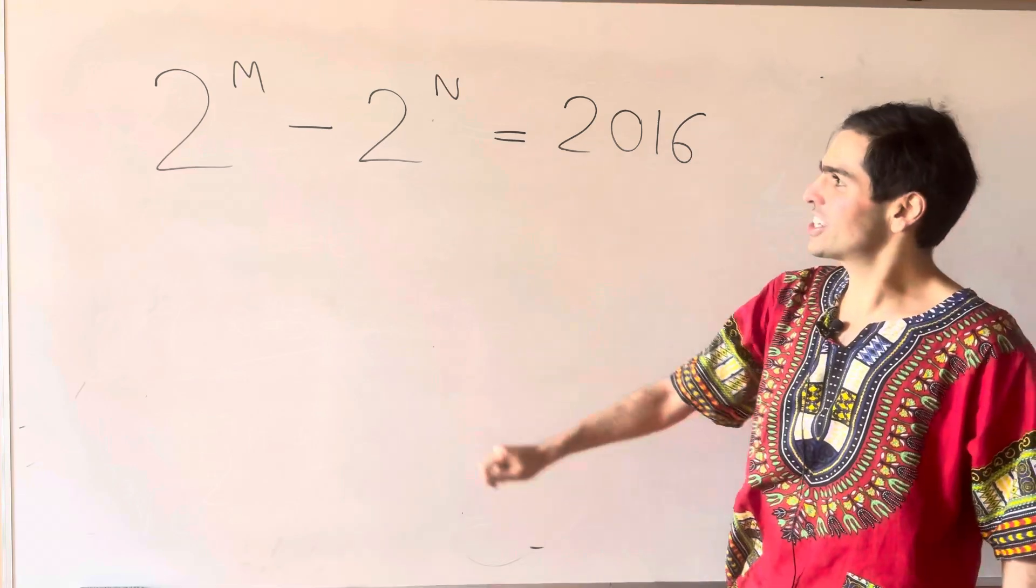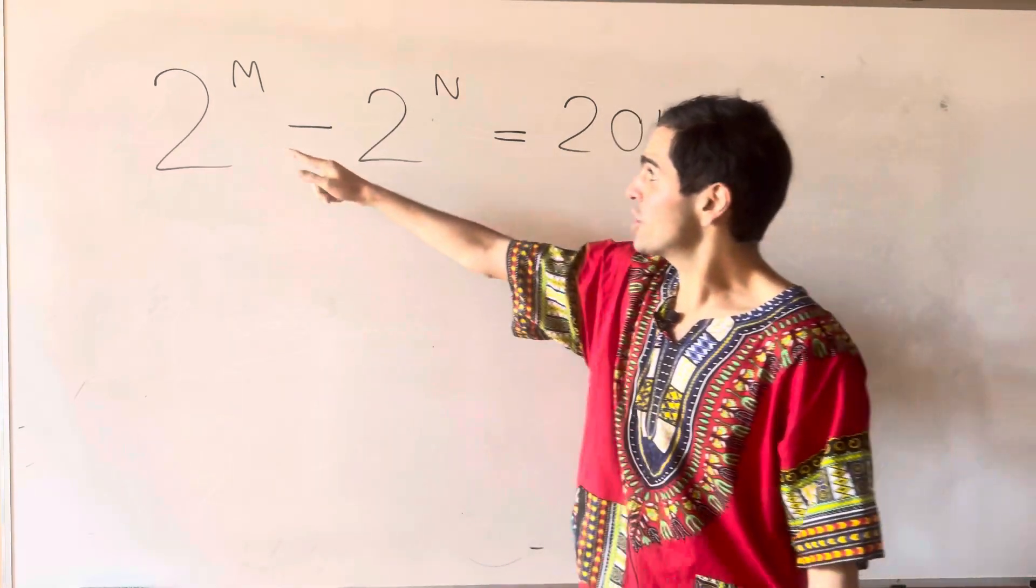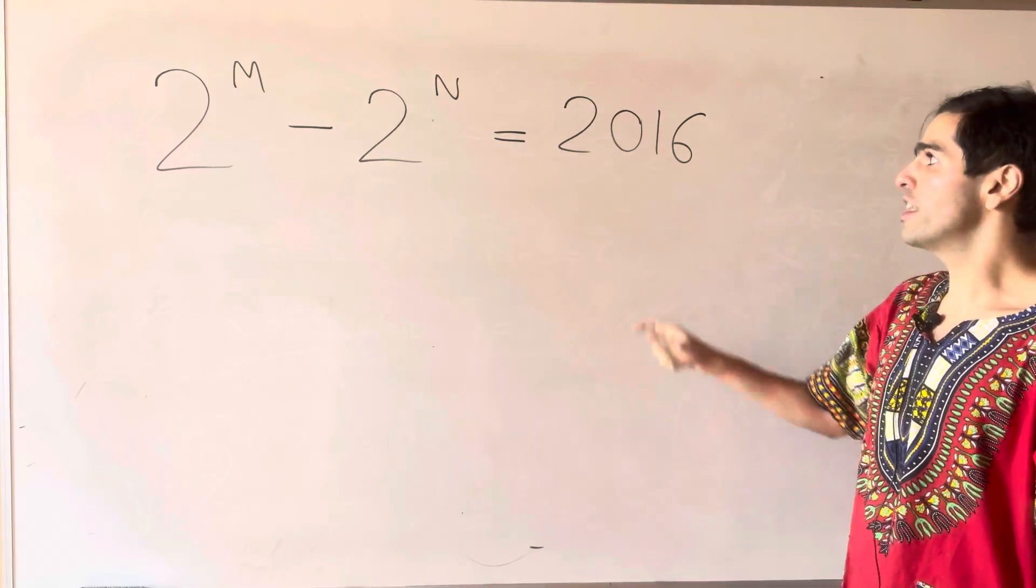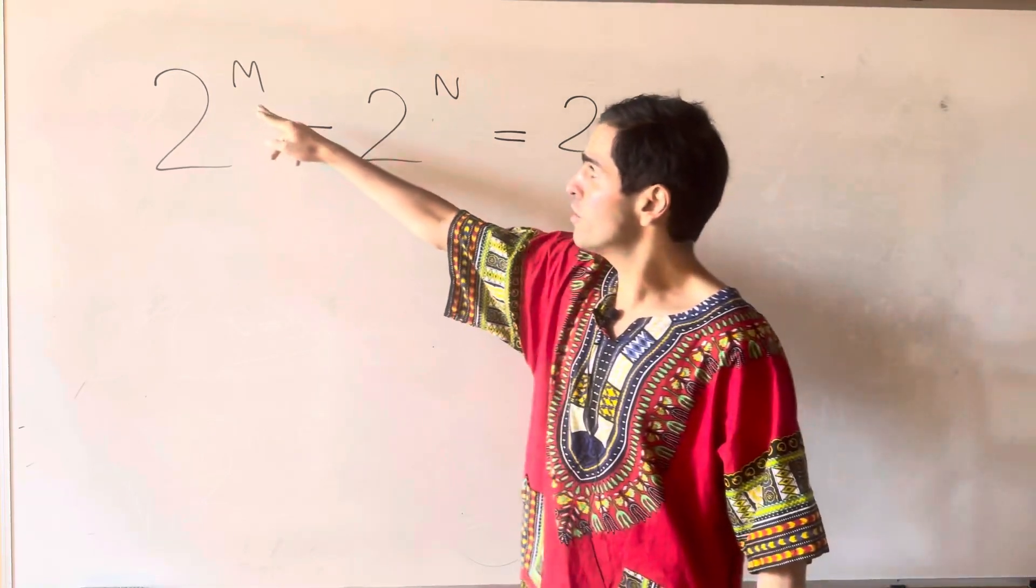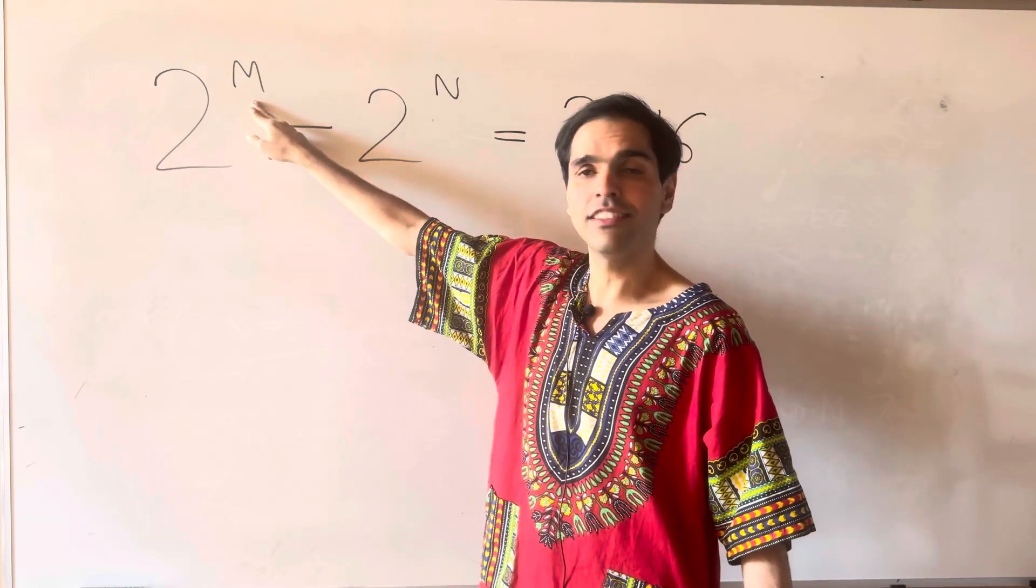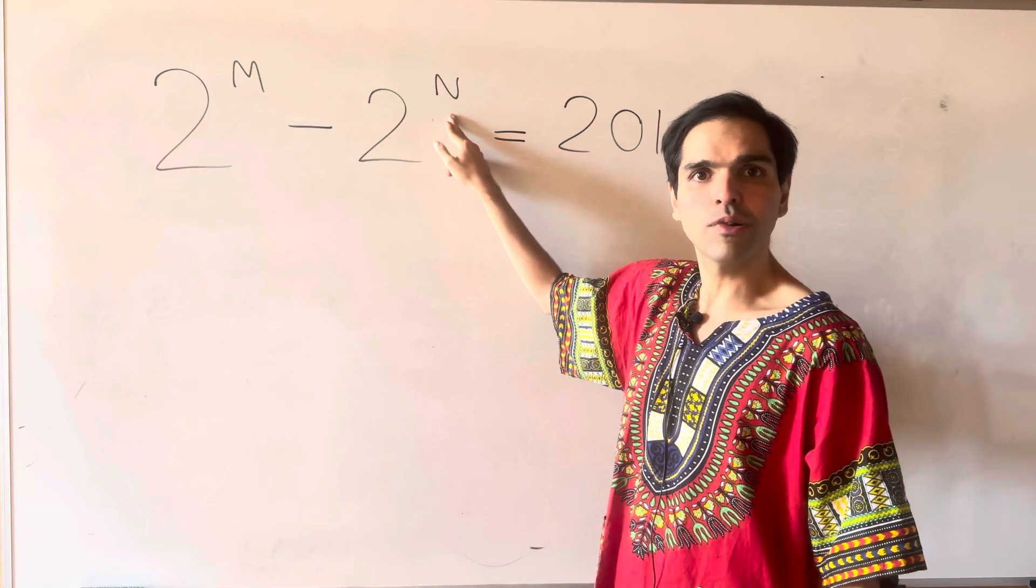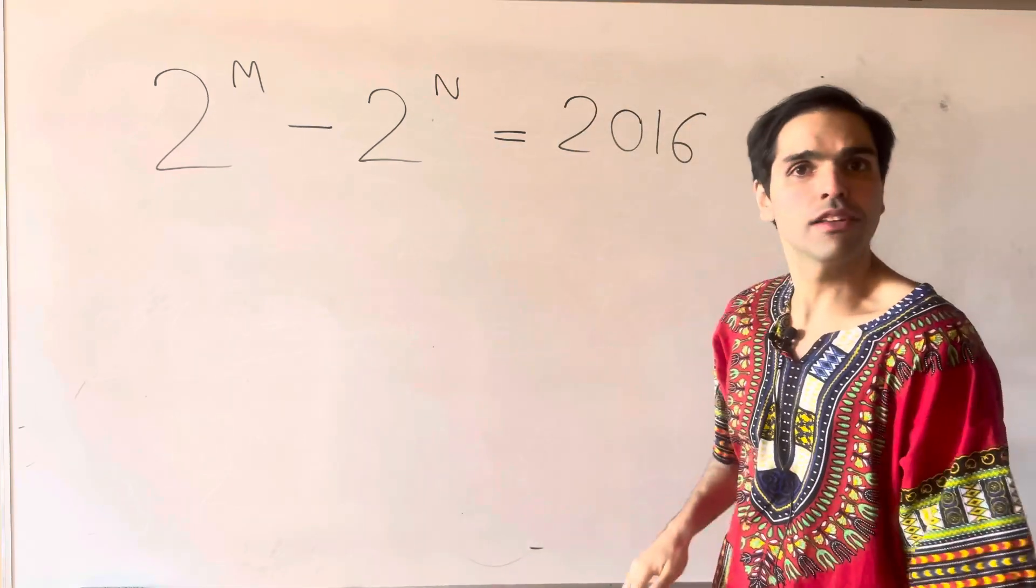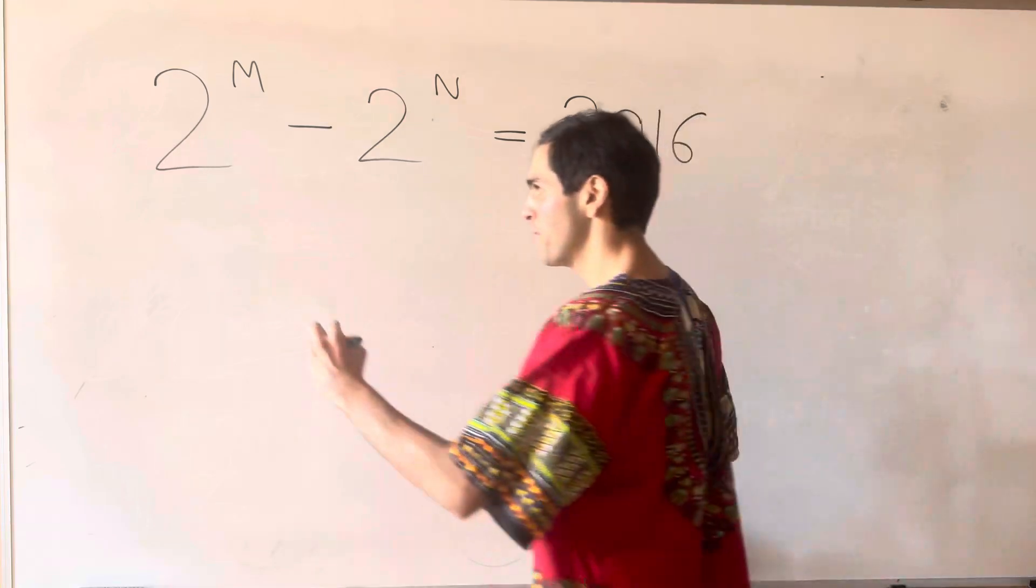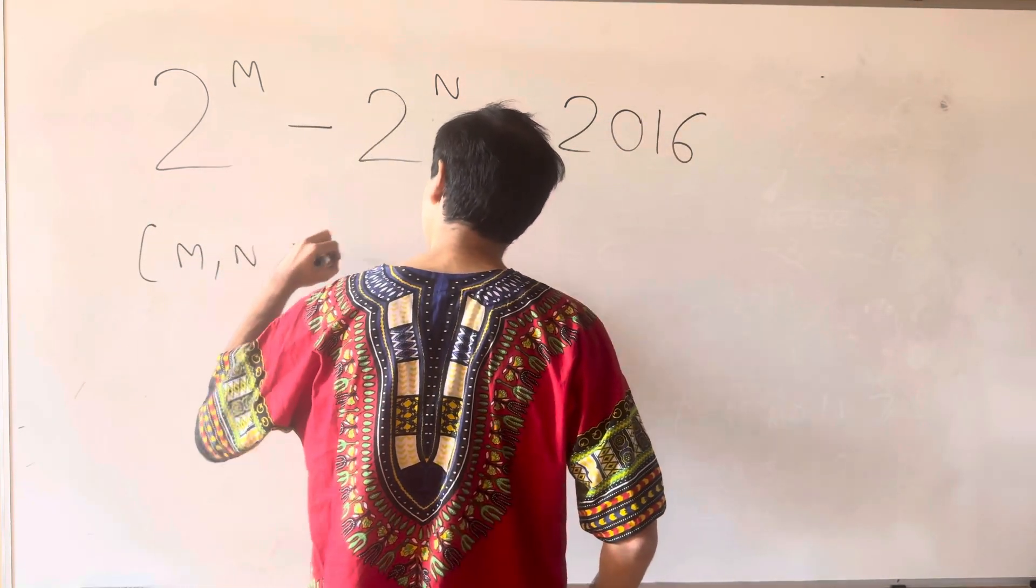Very cute question. Let's find all the integers m and n such that 2 to the m minus 2 to the n is 2016. First of all, the first thing to notice is that m and n have to be greater or equal to 0, otherwise you get a number that's less than 2 and it wouldn't work. So m and n are greater or equal to 0 integers.